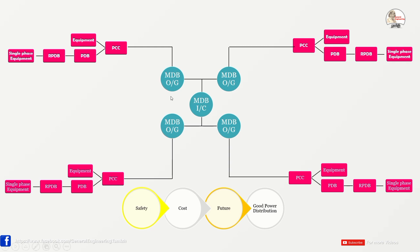The second consideration is cost. If the transformer and MDB are placed at one end of the plant, cable length for power distribution across the whole plant increases, which raises cable cost, cable tray cost, installation cost, and manpower cost. So it is better to place the MDB and transformer in the middle of the plant.